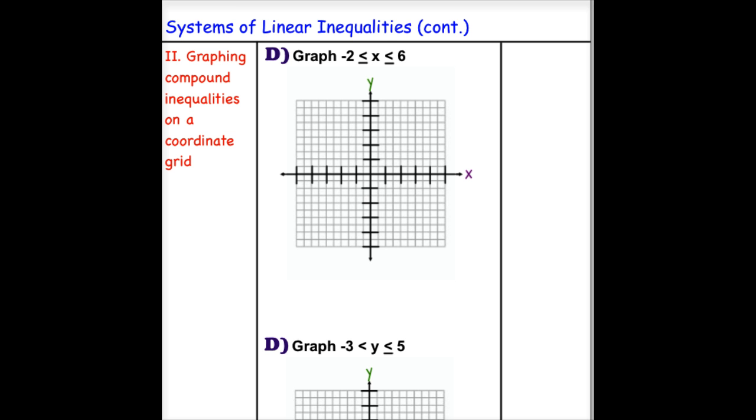So we break this apart first into x is greater than -2. When I see that and I'm looking on a coordinate grid, I know that means I have a vertical line, and it's going to be solid because it's greater than or equal to, and it'll be at -2. And because it is greater than or equal to, when we highlight, we're going to highlight to the right.